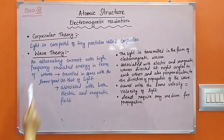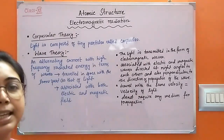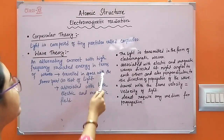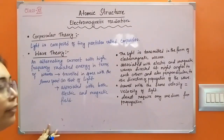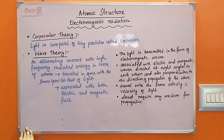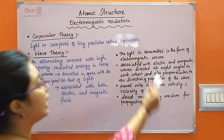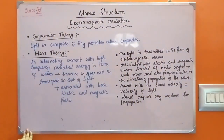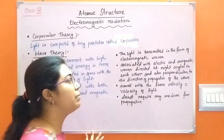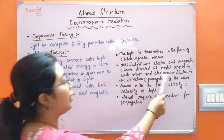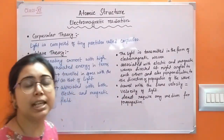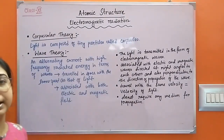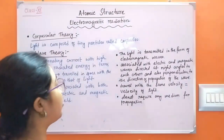Later, Maxwell found that an alternating current with high frequency radiated energy in the form of waves. These waves travel in space with the same speed as that of light, and are associated with both electric and magnetic fields. These waves are called electromagnetic waves or electromagnetic radiation, and this theory is called the wave theory of light. According to this theory, light is transmitted in the form of electromagnetic waves, associated with electric and magnetic fields directed at right angles to each other and perpendicular to the direction of propagation. Electromagnetic waves do not require any medium for propagation or transmission.